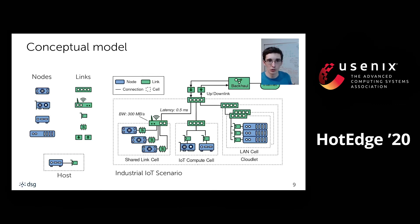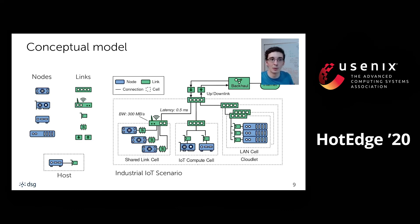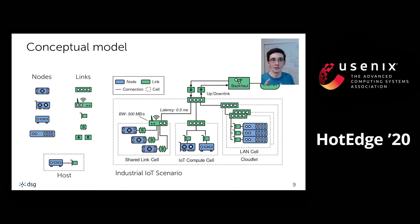This example shows an industrial IoT scenario where a factory floor is equipped with three single board computers connected through a shared Wi-Fi link. The factory floor also hosts an IoT compute cell — some embedded AI hardware and an Intel NUC — and an on-premises cloudlet. The tool gives you these cells as building blocks. You can instantiate the cloudlet by simply passing the number of racks and server computers, and the tool will create and connect the necessary components to form a LAN cell.